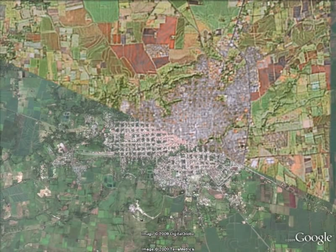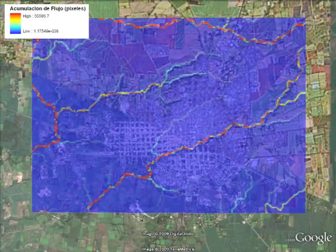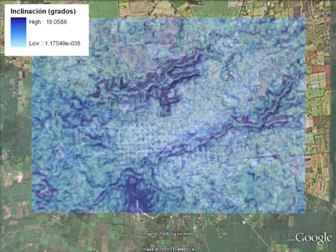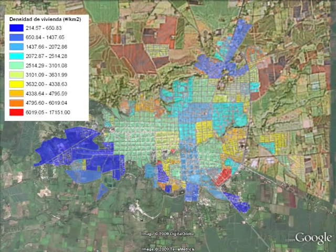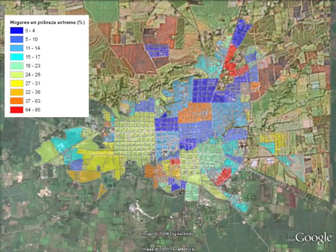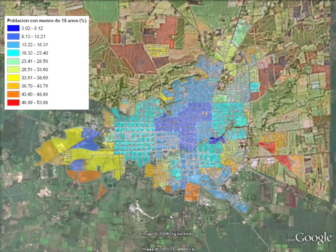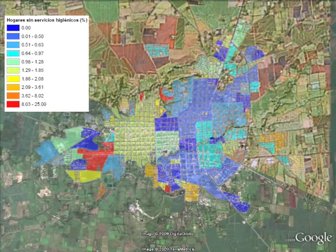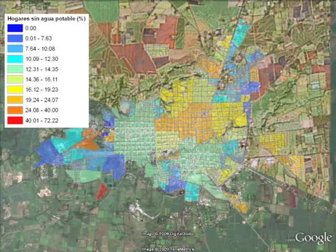The following variables were used: the percent of households in extreme poverty; the rate of fertile women to children under five years of age; percent of the population less than 15 years old; percent of houses with toilets or latrines; percent of houses without access to garbage collection services; and percent of houses with no potable water source on site.